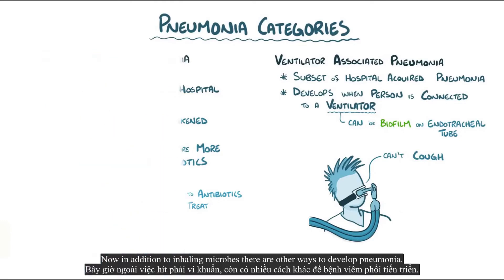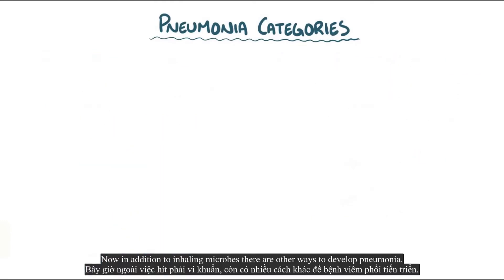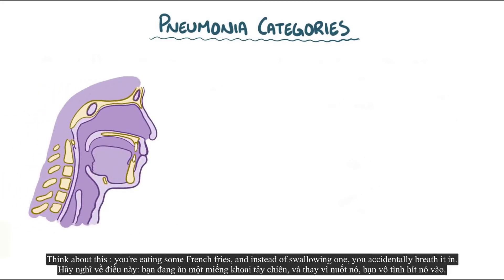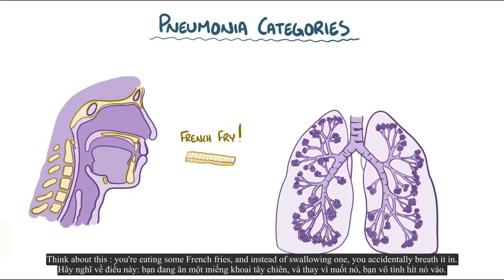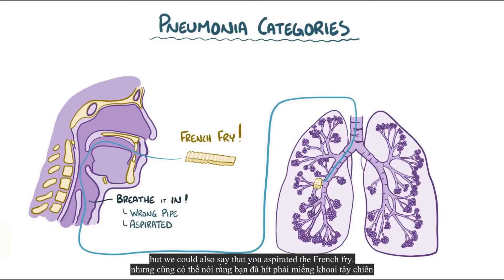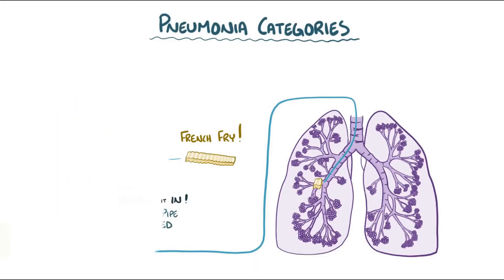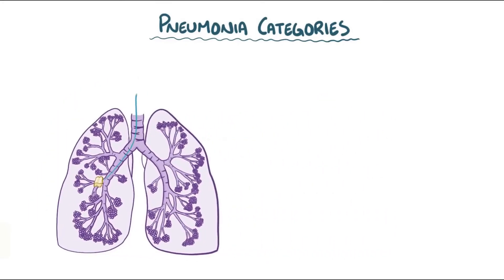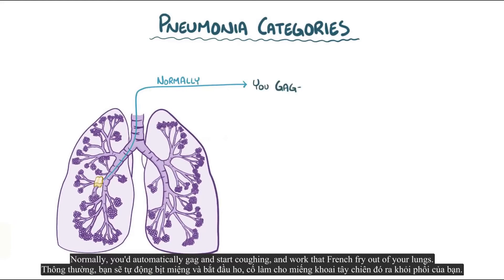In addition to inhaling microbes, there are also other ways to develop pneumonia. Think about eating some french fries and accidentally breathing one in instead of swallowing it — informally we call that going down the wrong pipe, but we could also say you aspirated that french fry. Normally you'd automatically gag and start coughing and work that french fry out of your lungs.